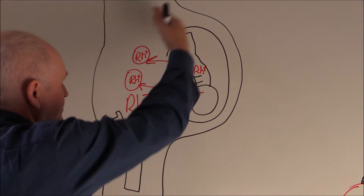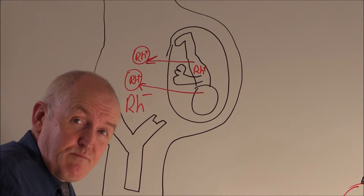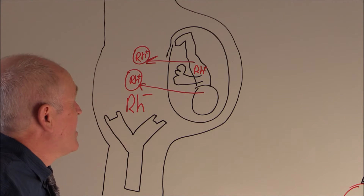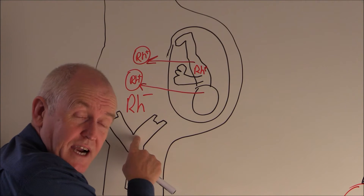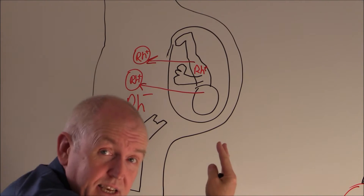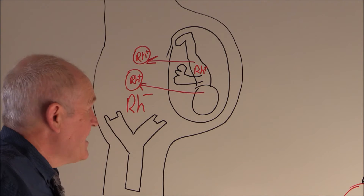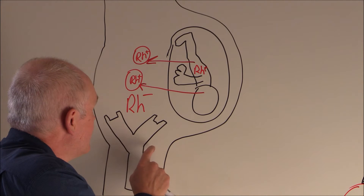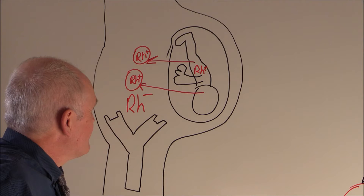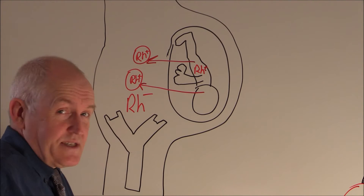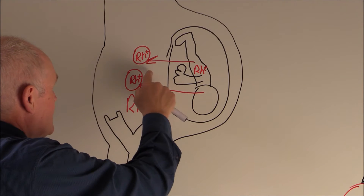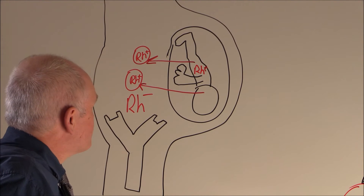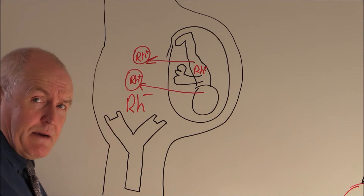This first baby is going to be born, and during the first pregnancy there's not usually any problem because most of the sensitization is likely to take place during the birth itself. So by the time the mother develops the Rhesus factor antibodies after delivery, the Rhesus-positive baby has already been delivered safely. But what this means is that the mother is now sensitized to the Rhesus factor — she now has Rhesus factor antibodies because of the fetomaternal hemorrhage.